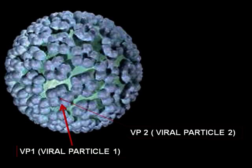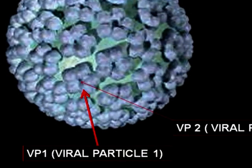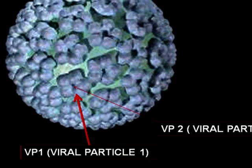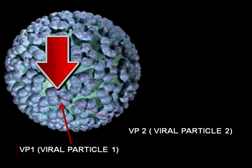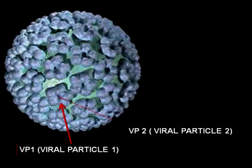The shell of Human Papilloma Virus is mainly composed of capsid proteins called VP1, which stands for Viral Particle Protein 1, and VP2, which stands for Viral Particle Protein 2. VP1 is also called the major capsid protein while VP2 is called the minor capsid protein. VP1 is an epitope of the virus, meaning it is the most important antigen responsible for triggering the host immune response. Antibody production toward VP1 is the basis of HPV vaccination.